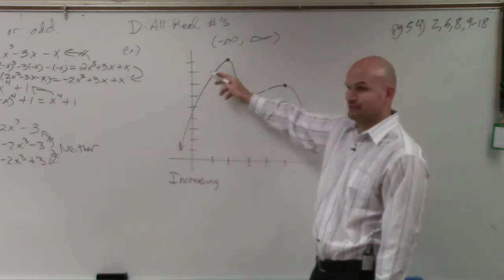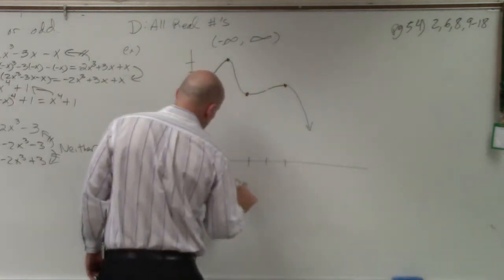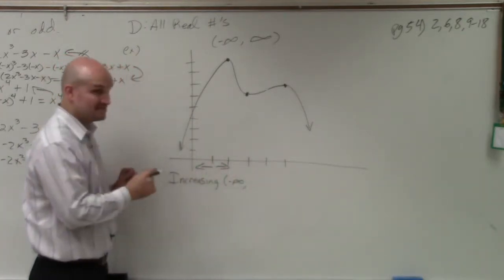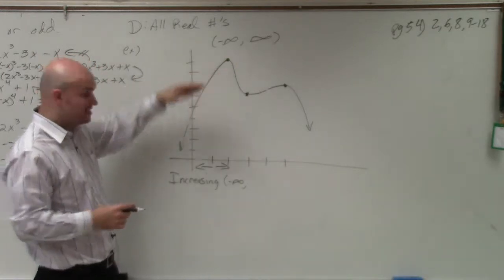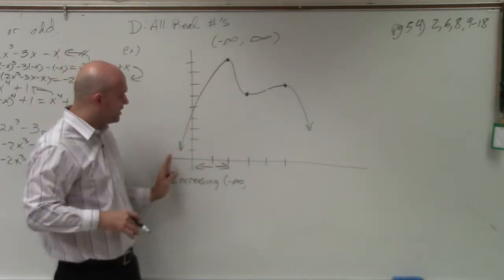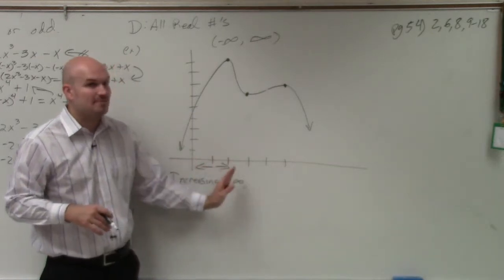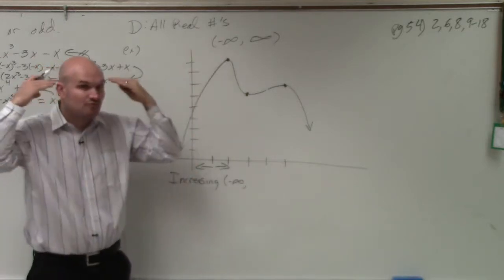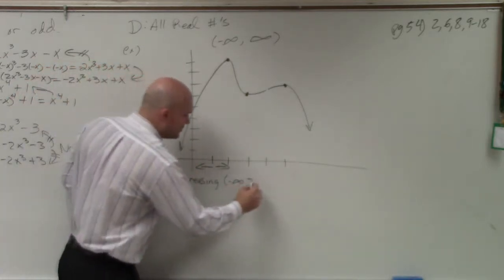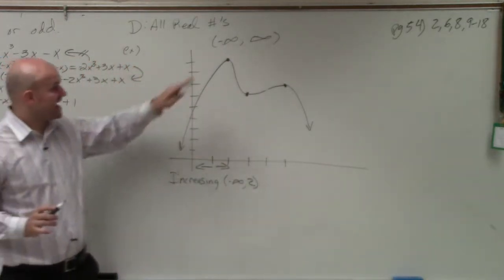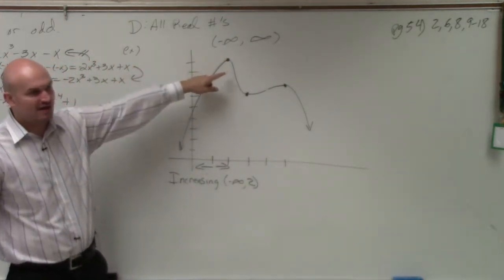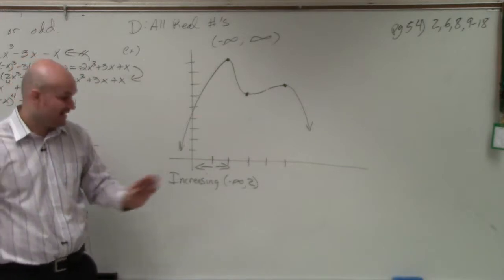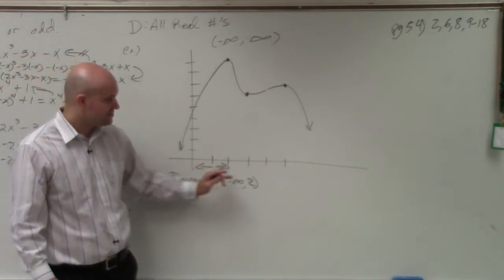As we're going all the way from left to right, this graph is increasing. So it's increasing from negative infinity all the way to the x value. We read left to right — I don't care what the y value is. How far is it increasing to the right? When does it stop? It stops at x equals 2. Everybody wants to give me the y value, but no — we're reading left to right, so it's increasing from negative infinity to 2.